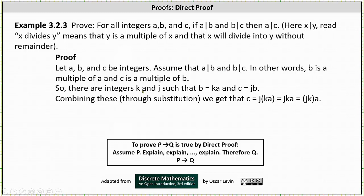So there are integers K and J such that B is equal to K times A because B is a multiple of A and C is equal to J times B because C is a multiple of B.